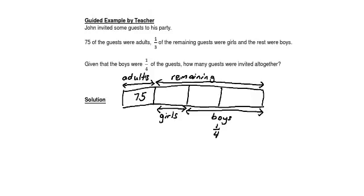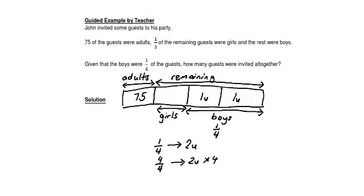For one whole, how many parts is it? One quarter is actually two parts, which you can consider as two units — one unit, one unit, one unit. So one whole will actually be 2 units times 4, equals 8 units.